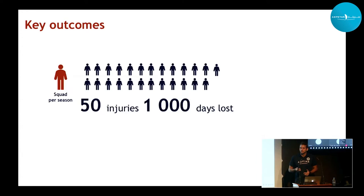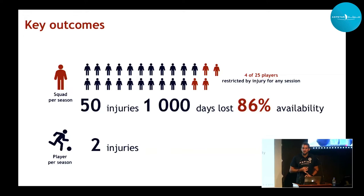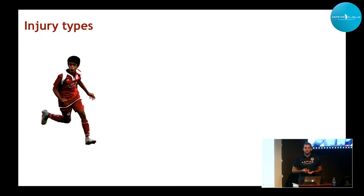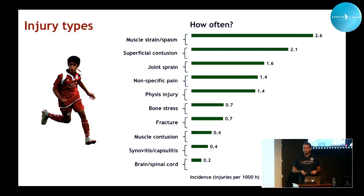Looking at key outcomes at the squad level: if you're a coach, you can expect approximately 50 injuries and 1,000 days lost over one season, and for any given session, four of his players will be restricted by injury. From a player's perspective, a player can expect to sustain around two injuries and lose around three weeks of training every season. One way of looking at which injuries happen is to count injuries divided by training hours — the incidence. In this football group, it looks quite similar to adults, where muscle strains and spasms, contusions, and joint ligament sprains are the most common.